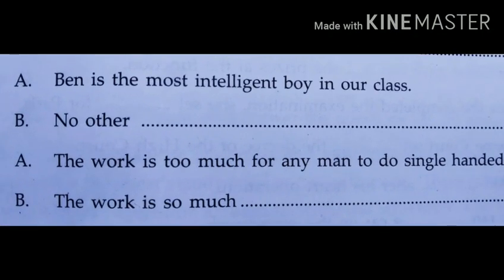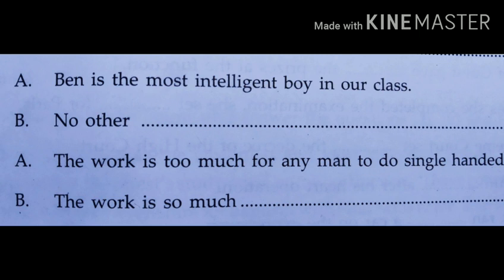The next sentence is: Ben is the most intelligent boy in our class. This sentence is in the superlative degree. Remember, it can be changed back to comparative degree or positive degree. According to the instruction, this has to be changed into positive degree. The answer is: No other boy in our class is as intelligent as Ben.